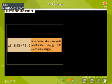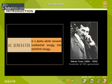What is an AC generator? An AC generator is a device which converts mechanical energy into electrical energy. AC generator was originally designed by Nikola Tesla.